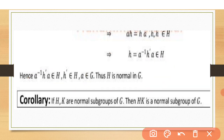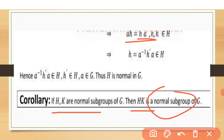Here is a corollary — a result from this theorem: if H and K are normal subgroups of G, then HK is also a normal subgroup of G. Since both are normal subgroups, they fulfill the condition, and when we multiply their elements we get the same result — HK is also a normal subgroup.